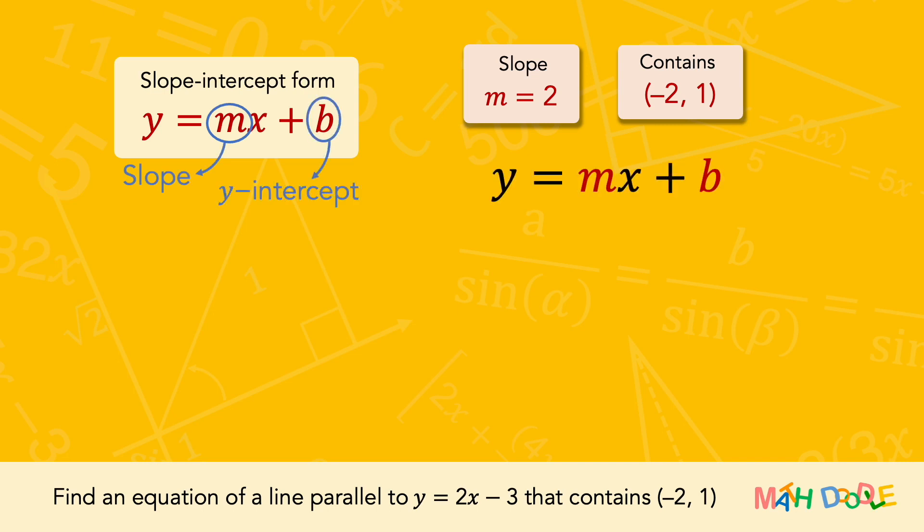So, let's first substitute the value of slope into the slope-intercept form. Next, we are going to find the y-intercept using a point of the line.